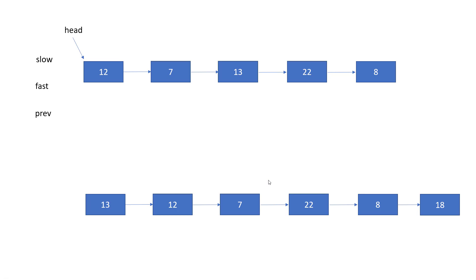Once we have found the middle node, our aim is to remove the existing linking — so node 7 should point to 22, not to the middle node. However, we have found the middle node but we don't have a reference to its previous node. That is why we will use a previous variable. Whenever slow jumps by one position, previous stores the node just before slow. So when slow is at the middle node, previous will be at node 7. We then point previous.next to slow.next, so 7 will point to 22.